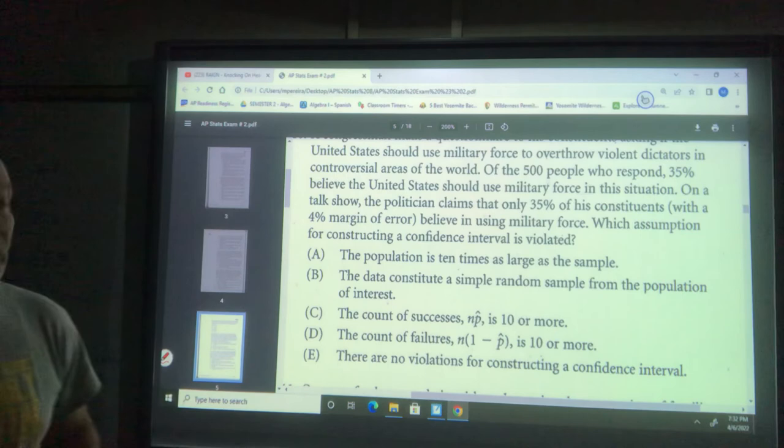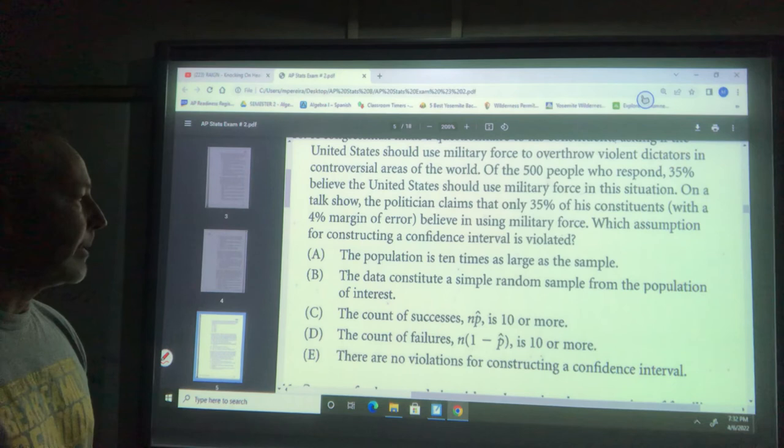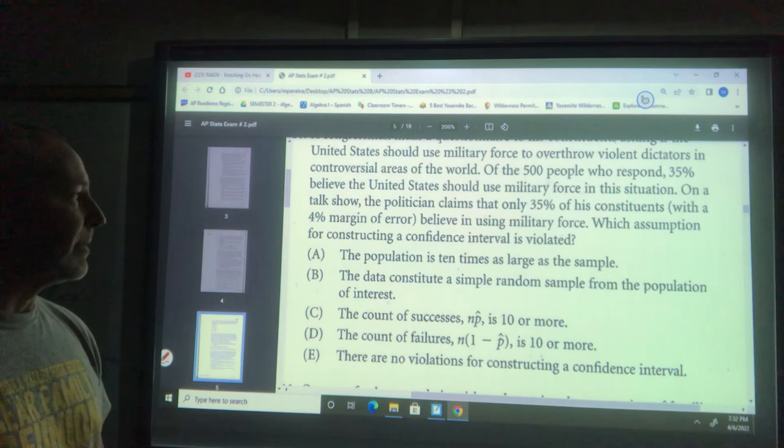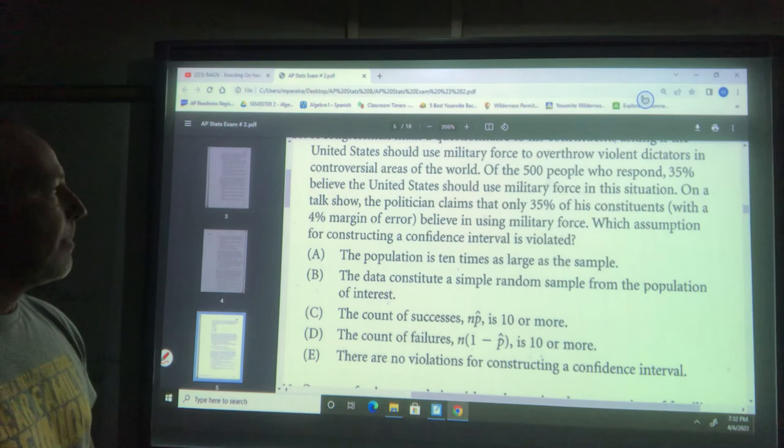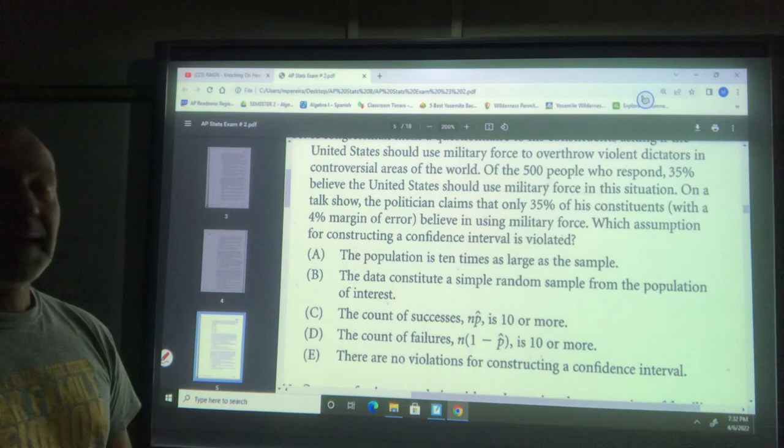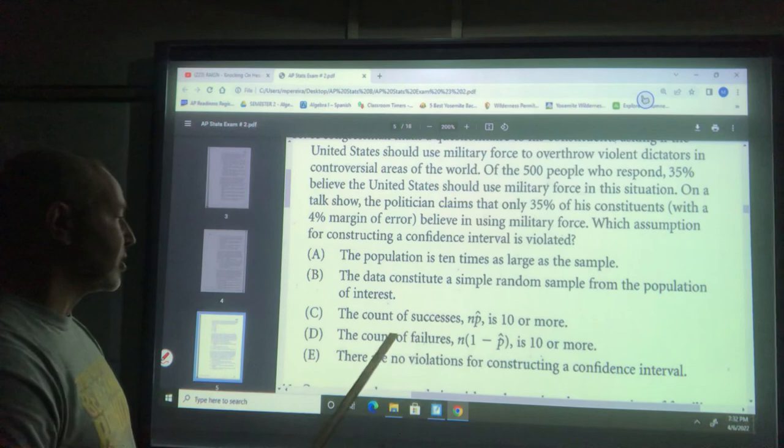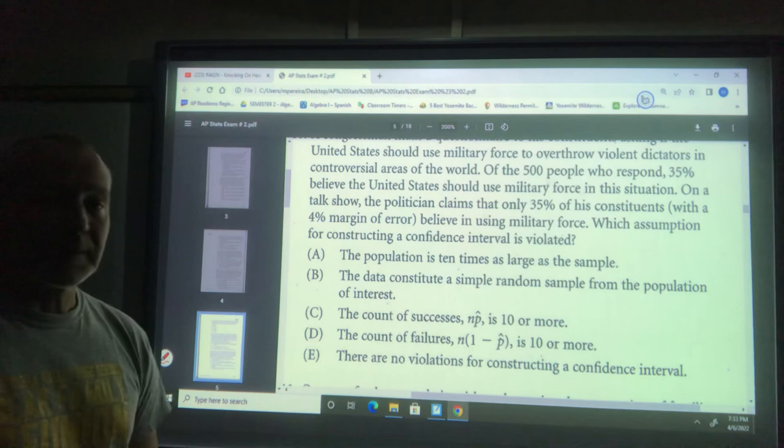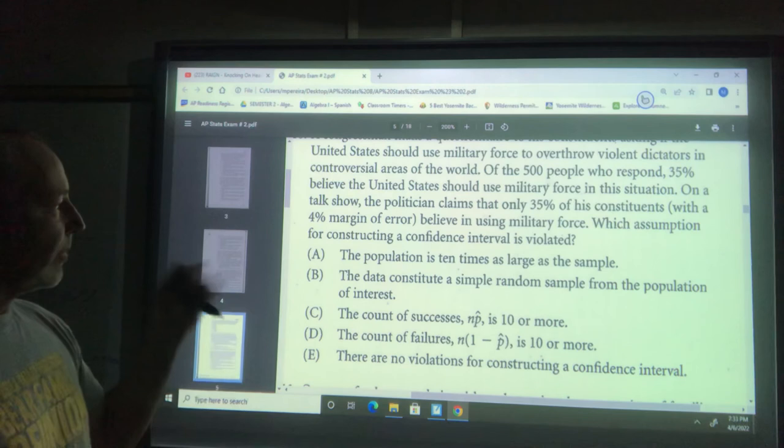The population is ten times as large as the sample - I assume that's true but can't be sure. The data constitute a simple random sample - that's the problem here. The data is not a random sample; these are his friends and workmates. N times p is 10 or more, and n times q is 10 or more - those are both okay.